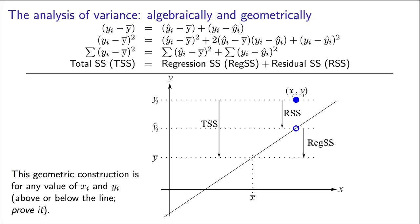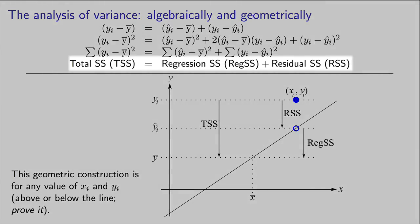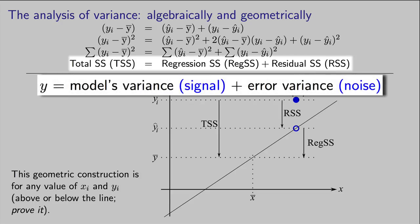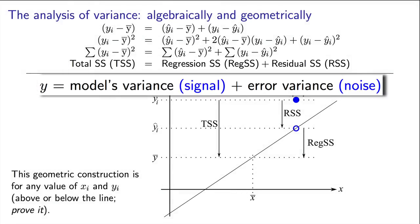There we see, kind of intuitively, what the least squares model is doing. We're taking a total amount of variance here on the left and breaking it up into two parts on the right. The first part is the part we can predict, the regression sum of squares. The second part is the portion we cannot predict, the residual sum of squares.